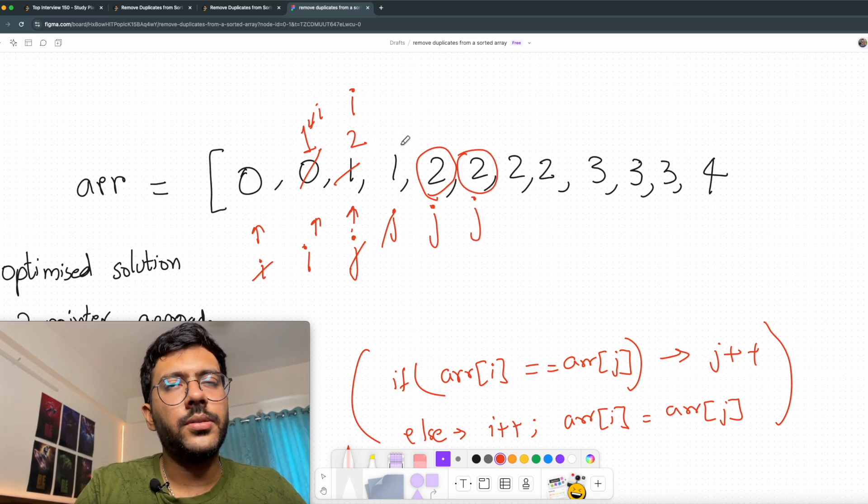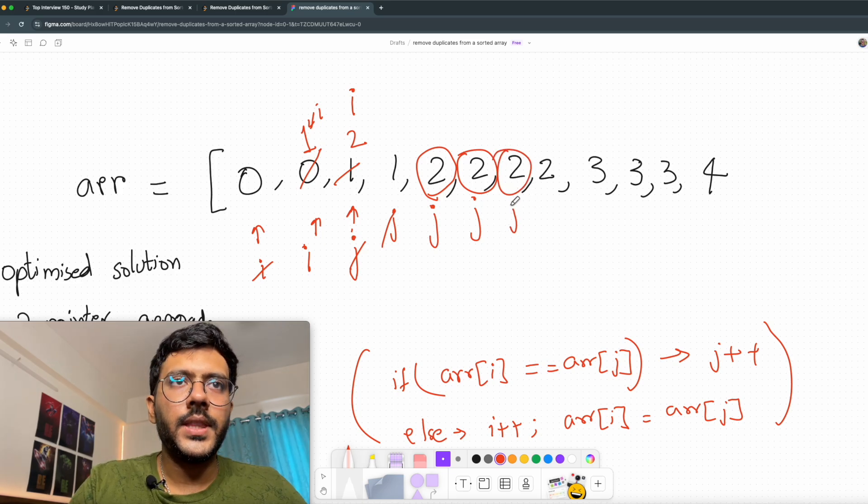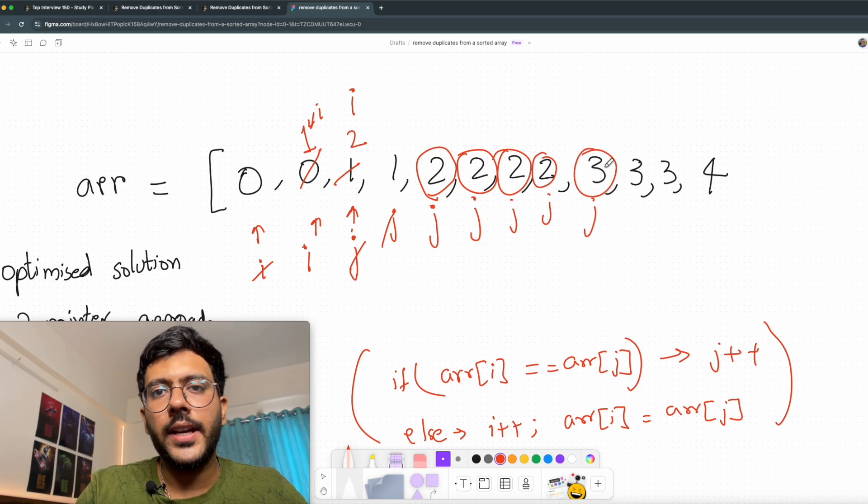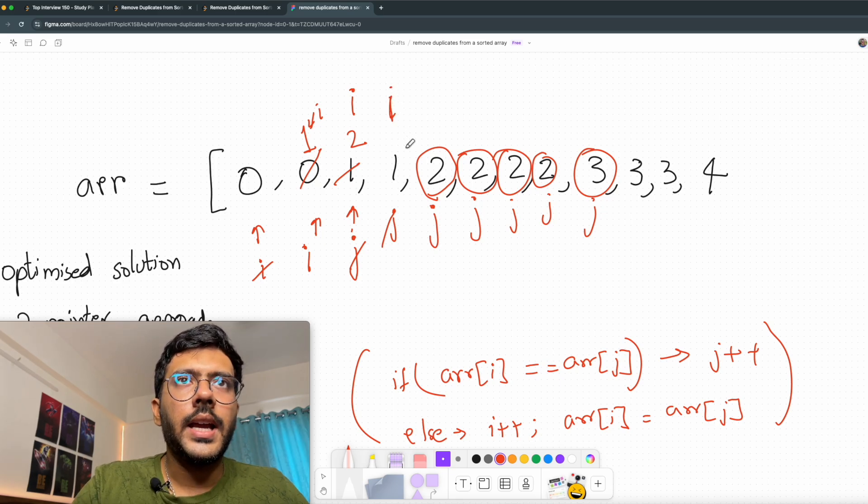Now I increment j again and I see it has 2. i also has 2, so I will increment j again. We have again got 2, so I will increment. Now when j arrives here, it has got 3 but i still has 2. So I will increment i and I will store this 3 at this position.